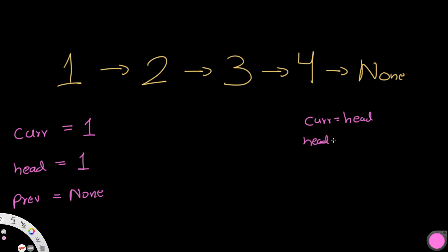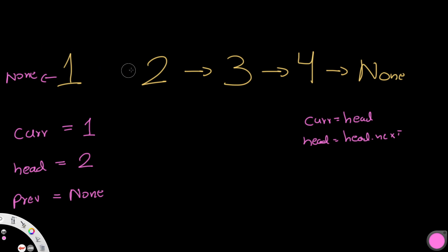Here are the steps for each iteration. First, we move head to head.next so we still have the connection to the next node intact. Then current.next is pointed to whatever the previous node is — so one now points to none, breaking the old connection. Finally, we update previous to be equal to current, so that when we move to node two, it knows to point back to one.